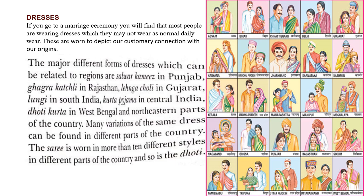Regarding dresses, people wear special outfits at ceremonies to depict their customary connections with their origins. Regional dress forms include salwar kameez in Punjab, ghagara and kachli in Rajasthan, lehenga choli in Gujarat, lungi in South India, kurta pajama in Central India, and dhoti kurta in West Bengal.